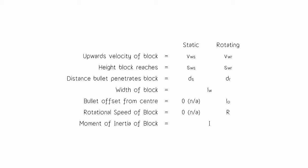We know that the height reached is the same, so Sws and Swr are equal — we can just refer to both as Sw. And because the block reaches the same height, it must have had the same upward velocity, so we can replace Vws and Vwr with a single Vw.